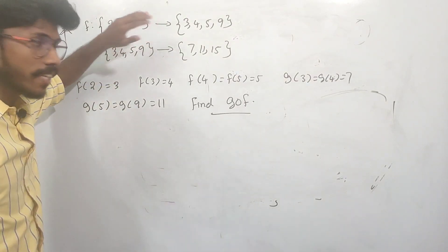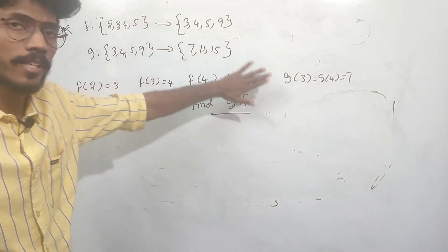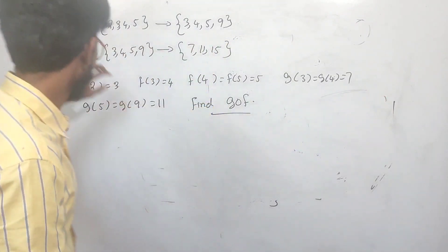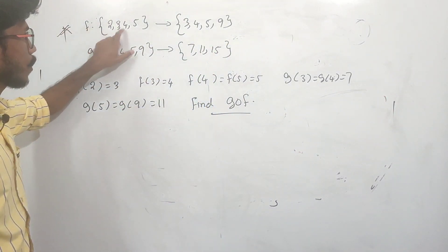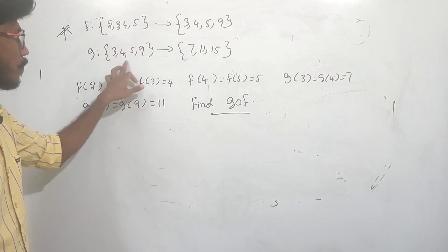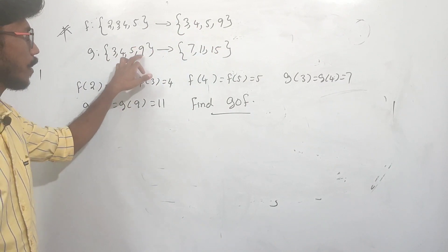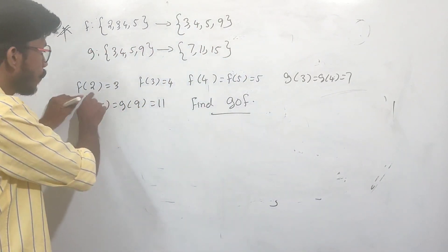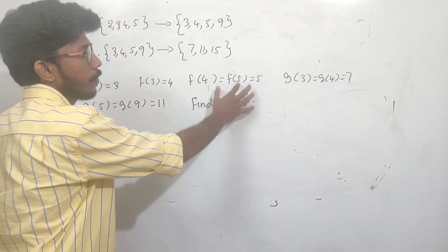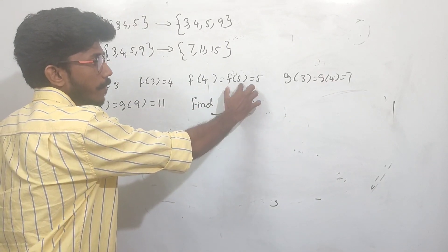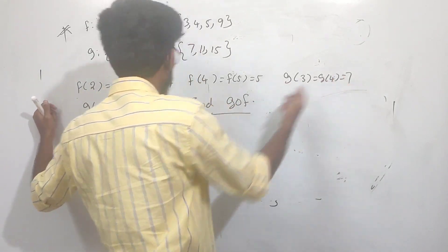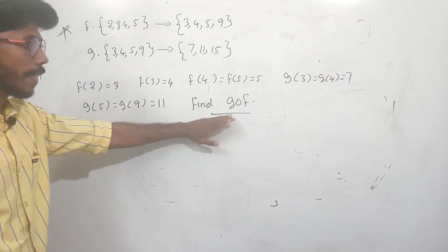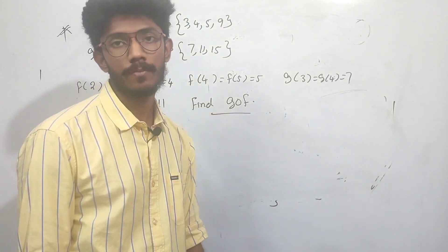Let's see an exam-style question. F is a function from {2, 3, 4, 5} to {3, 4, 5} and G is a function from {3, 4, 5, 9} to {7, 11, 15}. Given: F(2)=3, F(3)=4, F(5)=5, G(3)=7, G(4)=7, G(5)=11, G(9)=11. Find G∘F.